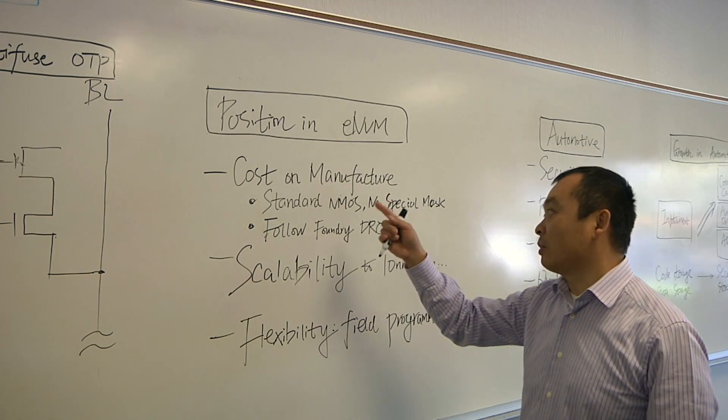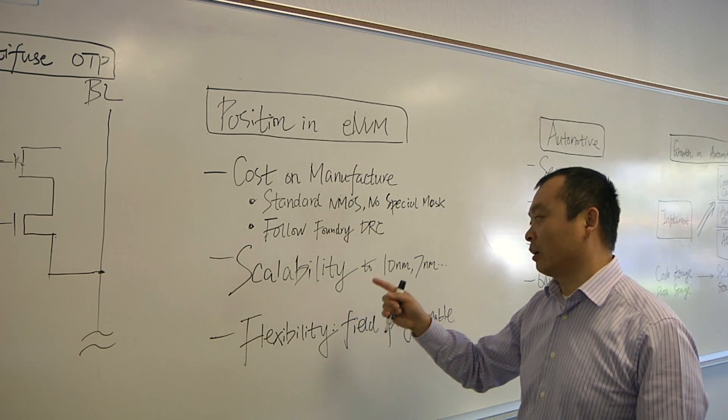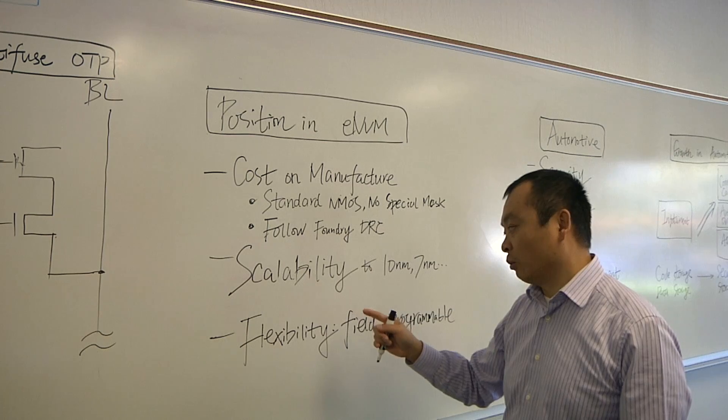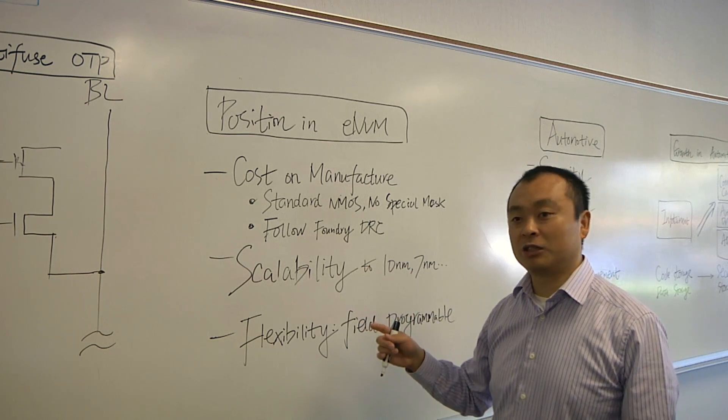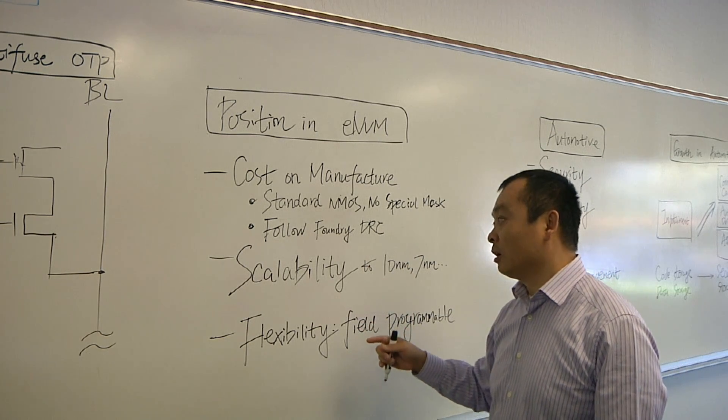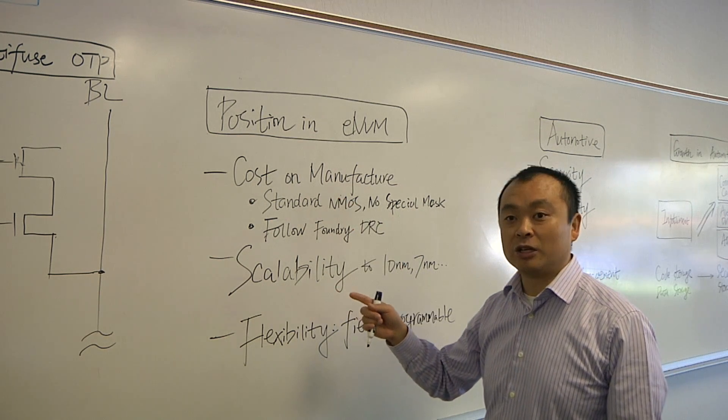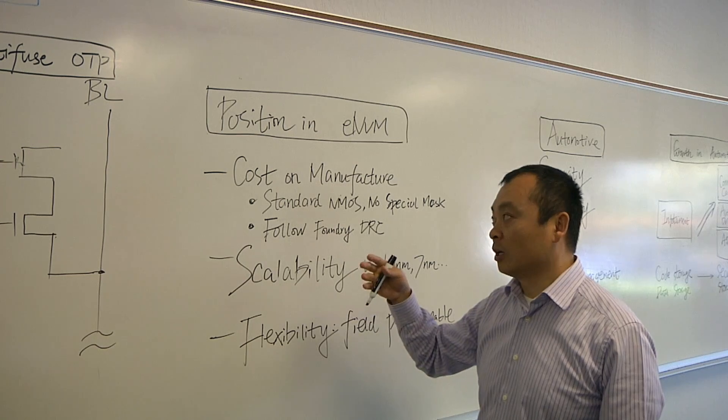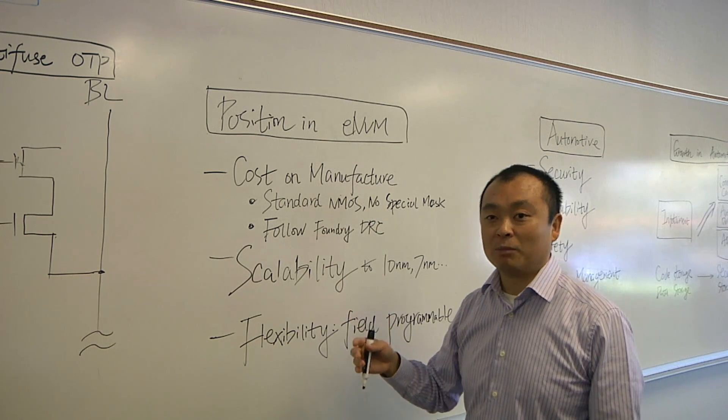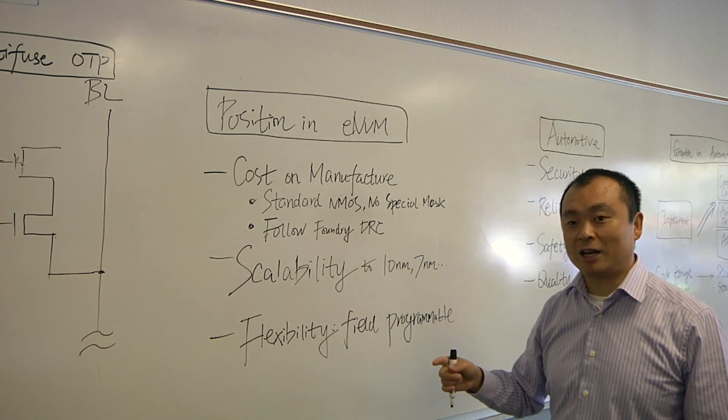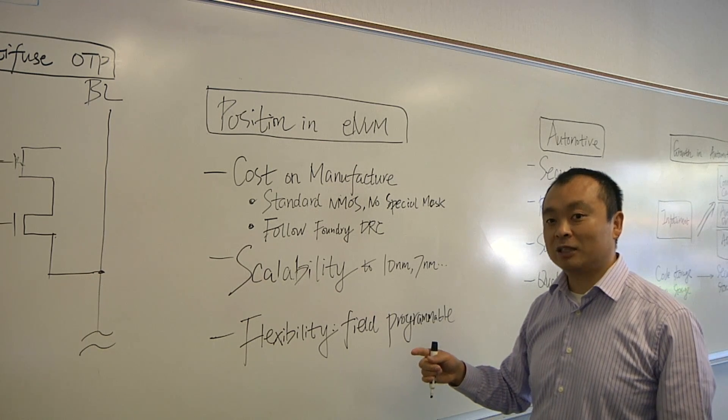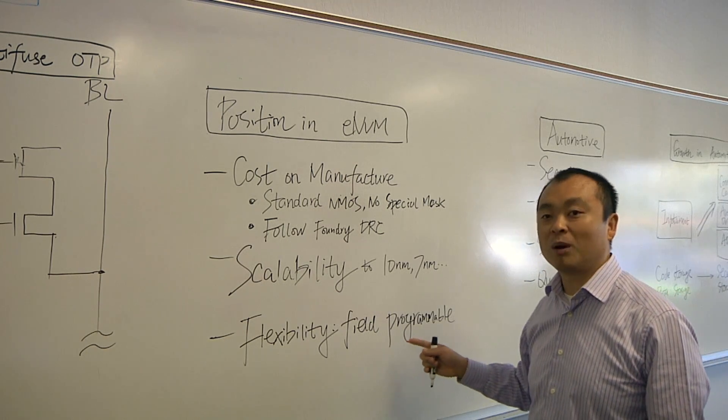So then, other than the cost of manufacturing and also the scalability, the OTP technology is also flexible to use. Because if we only look at the cost and scalability, the standard ROM can also satisfy these conditions. But ROM is not as flexible as OTP. It doesn't provide the field programmability.